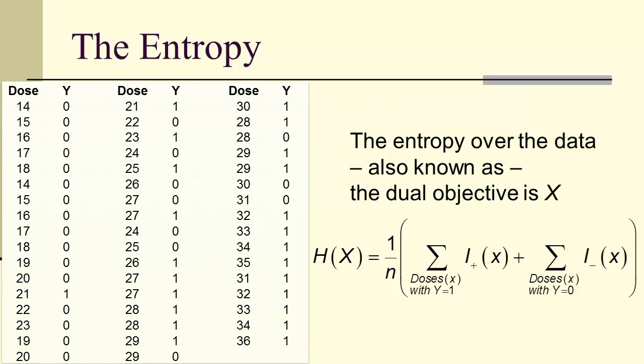So the entropy over the data, and sometimes the entropy over the data is what's known as the dual objective, is given there, the dual objective on x is given there.